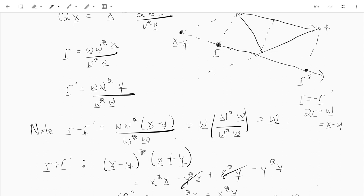First, let's check that r minus r prime is actually equal to w. Well, r minus r prime has the same kind of, this term is the same, and the only difference is in x and y. So we get ww star times x minus y divided by w star w. But x minus y is just w. So now we have w, w star w divided by w star w. Those cancel, we just end up with w. So r minus r prime equals w.